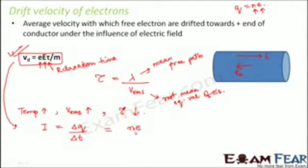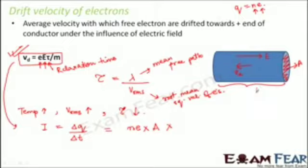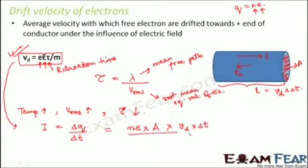The total charge flowing inside the conductor equals n times e times the volume of the conductor. Volume equals cross-sectional area A multiplied by the length of the conductor. This length is basically the total distance traveled, and distance equals speed times time. The speed here is the drift velocity vd, and the time is delta t, so the length is vd times delta t.